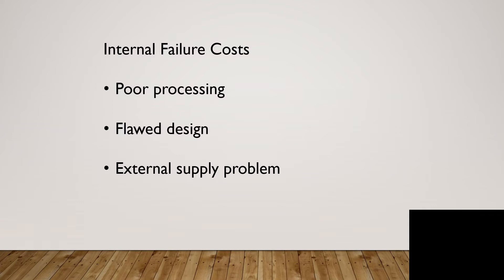These types of costs can occur at any stage of a process. Poor processing costs are usually caused by faulty equipment, employees who don't follow procedures, untrained personnel, unsuitable environmental conditions such as hot or noisy work areas, or defective materials. The short-term actions for these types of internal costs are to replace, rework, or scrap the faulty item. The long-term solution is performing a root cause analysis and providing a permanent fix such as new equipment, procedures, or training.